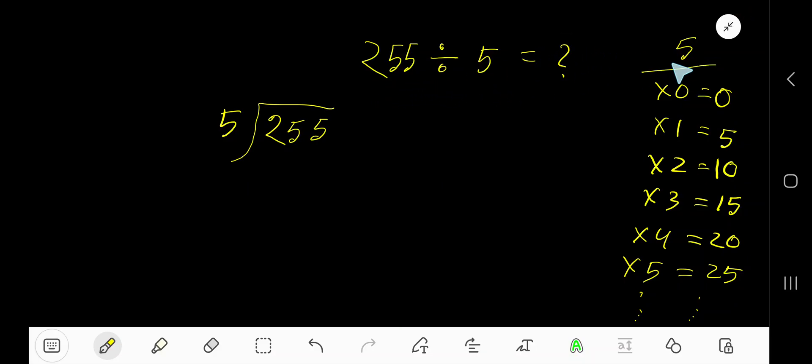255 divided by 5. Here 5 is the divisor, so we need the multiplication table of 5. 5 times 0 is 0, 5 times 1 is 5, 5 times 2 is 10, 5 times 3 is 15.